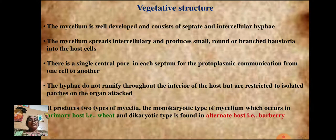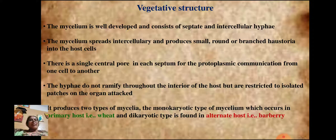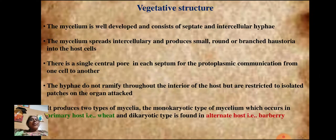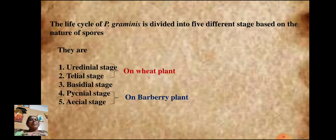Puccinia produces two types of mycelia: monokaryotic mycelium, which occurs in the primary host (wheat), and dikaryotic mycelium, found in the alternate host, the barberry plant. The life cycle of Puccinia graminis is divided into five different stages based on the nature of spores.